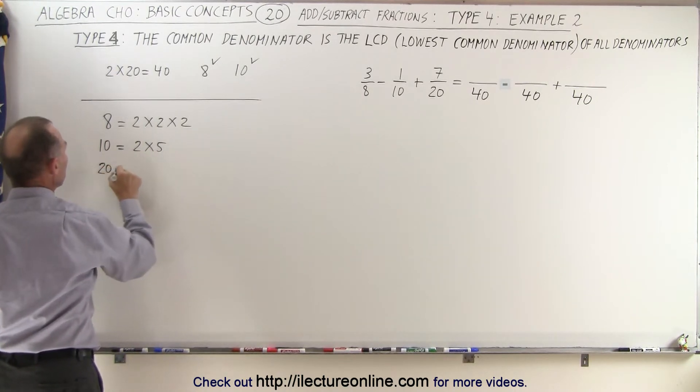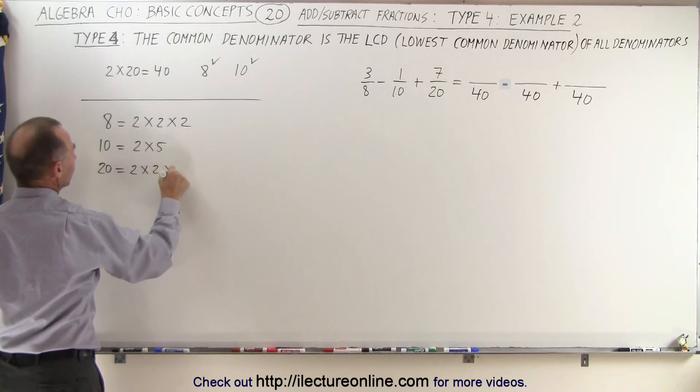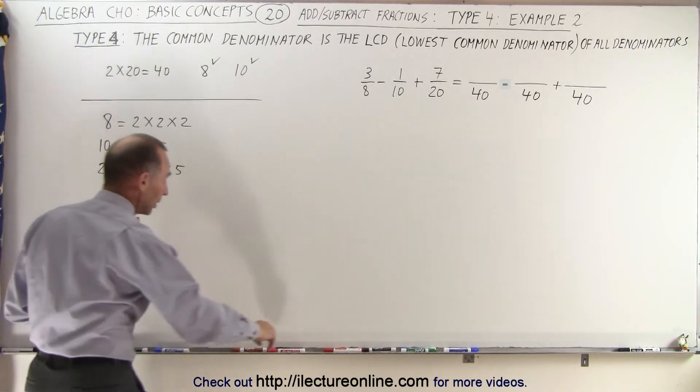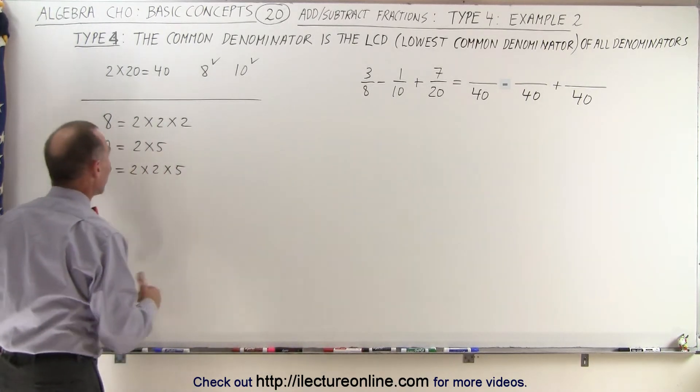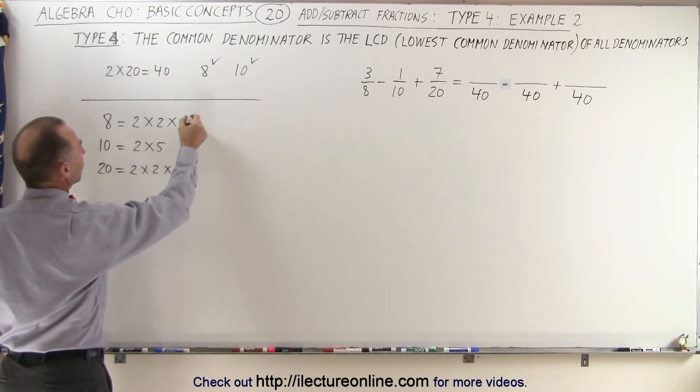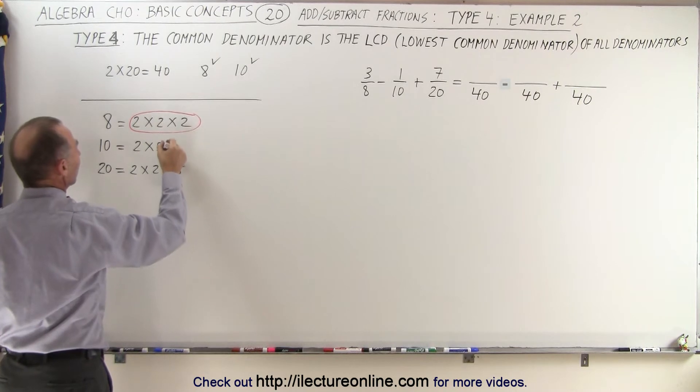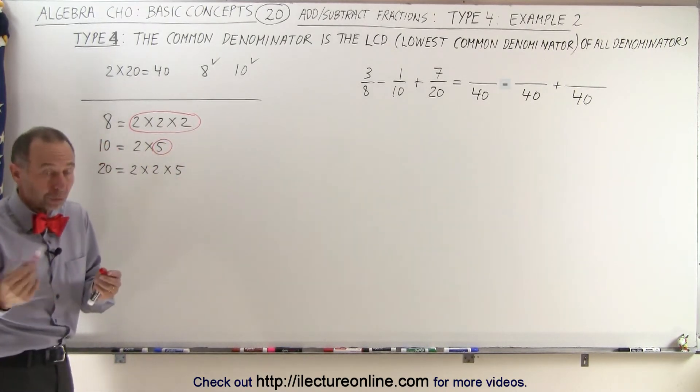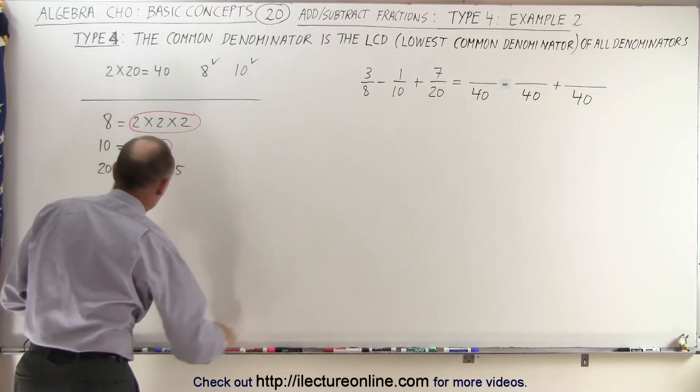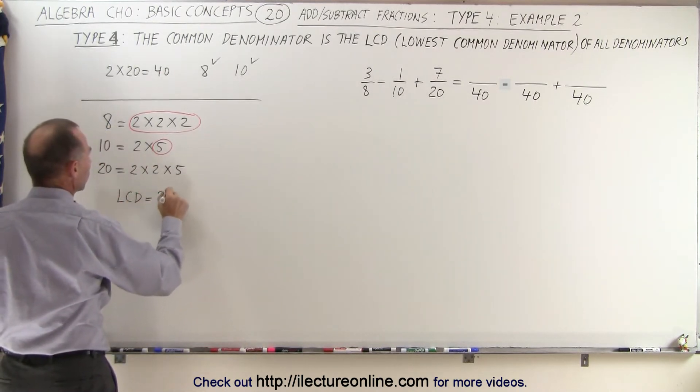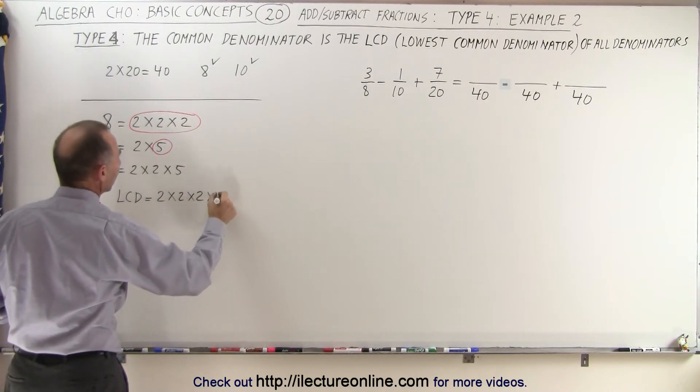And 20 is equal to 2 times 2 times 5, so you can see that 2 appears twice and 5 appears once, which means that the lowest common denominator is going to be a product of all the factors that occur the most times for any one number. So in this case, the factor 2 appears 3 times and the factor 5 appears once here and here, but we only need to account for it one time.